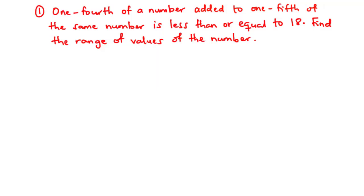Hello students, good day and welcome back to this channel. In today's video we are going to continue our lesson on linear inequalities — we are going to solve word problems involving linear inequalities in one variable. Our first example: one-fourth of a number added to one-fifth of the same number is less than or equal to 18. Find the range of values of the number.